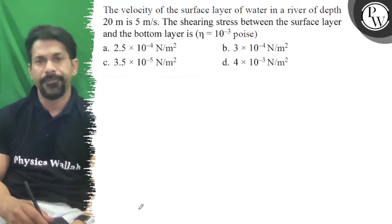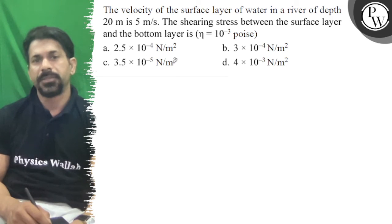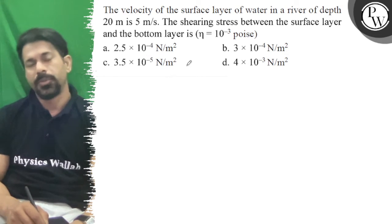Hello, let's introduce the velocity of the surface layer of the water in a river of the depth of 20 meters is 5 meters per second. There is shearing stress between the surface layer and the bottom layer.